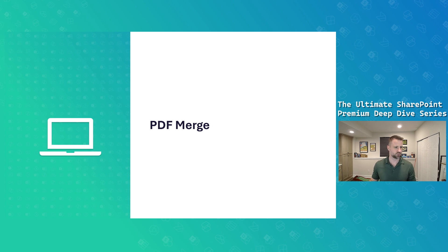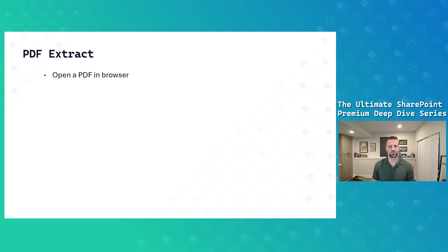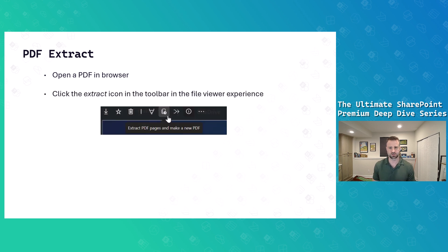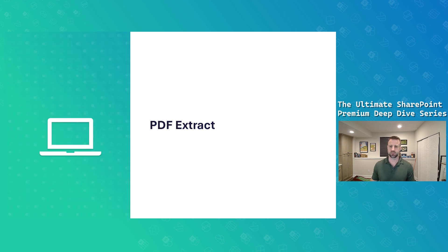Let's talk about extraction. Next on the list is PDF extract. If we have a file and want to extract pages from that PDF, we follow a very similar process: open the PDF in the browser, click the extract icon in the file viewer, select the pages you want to extract, and create a new file with those selected pages.